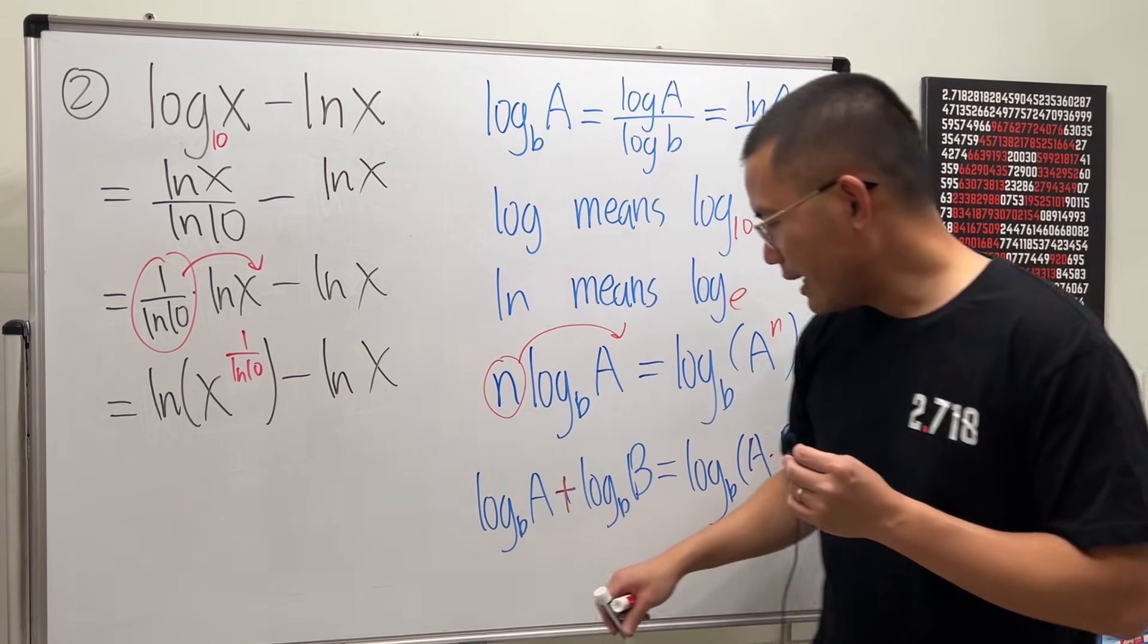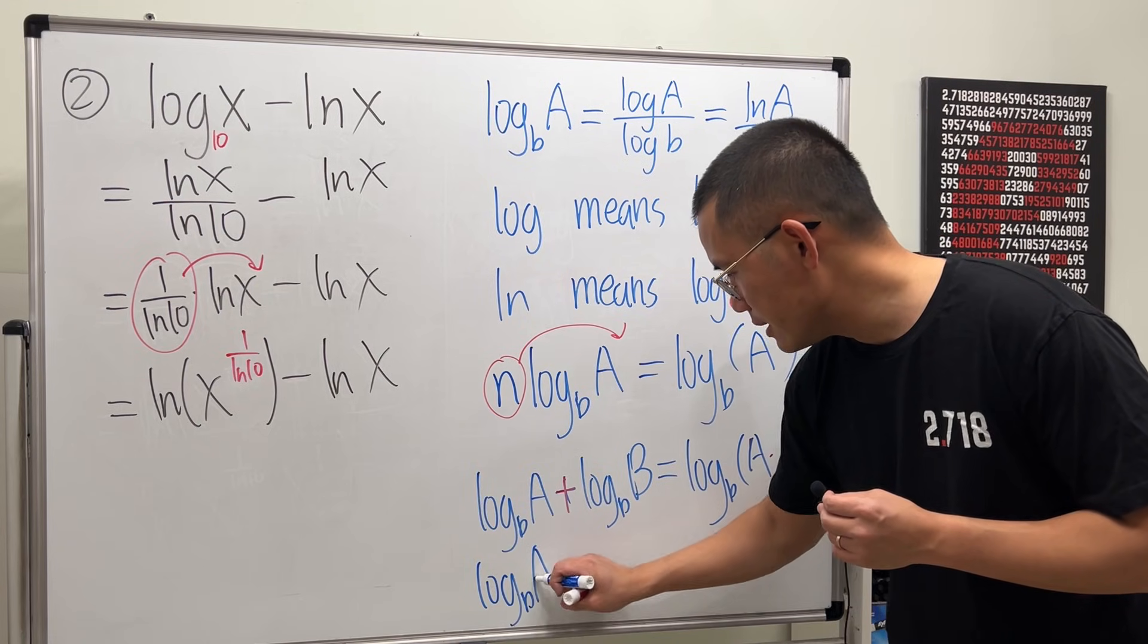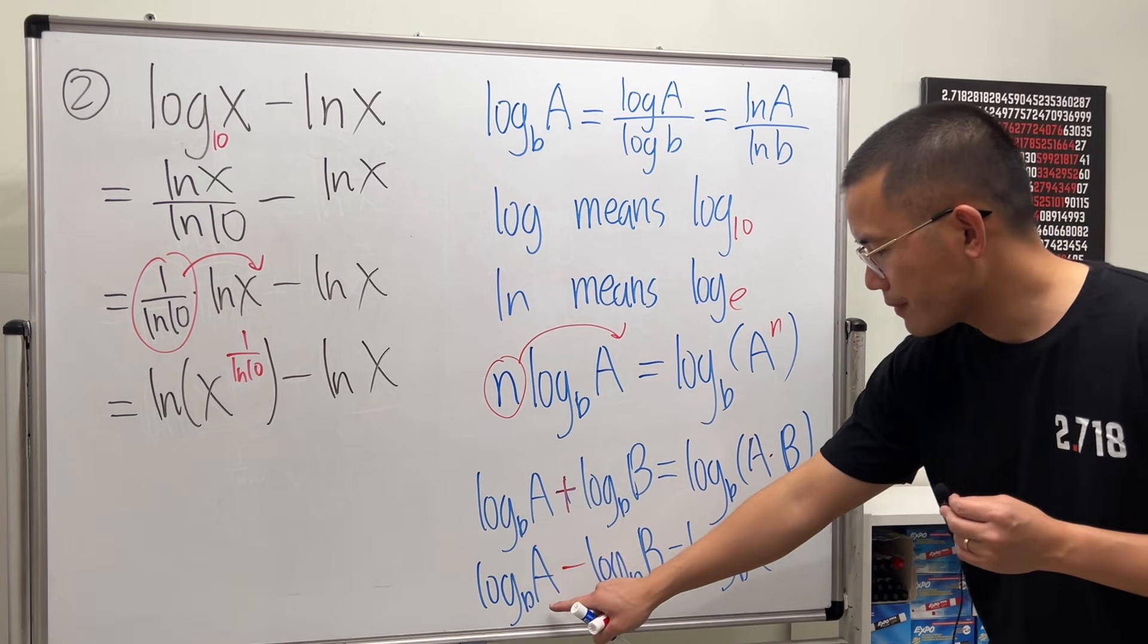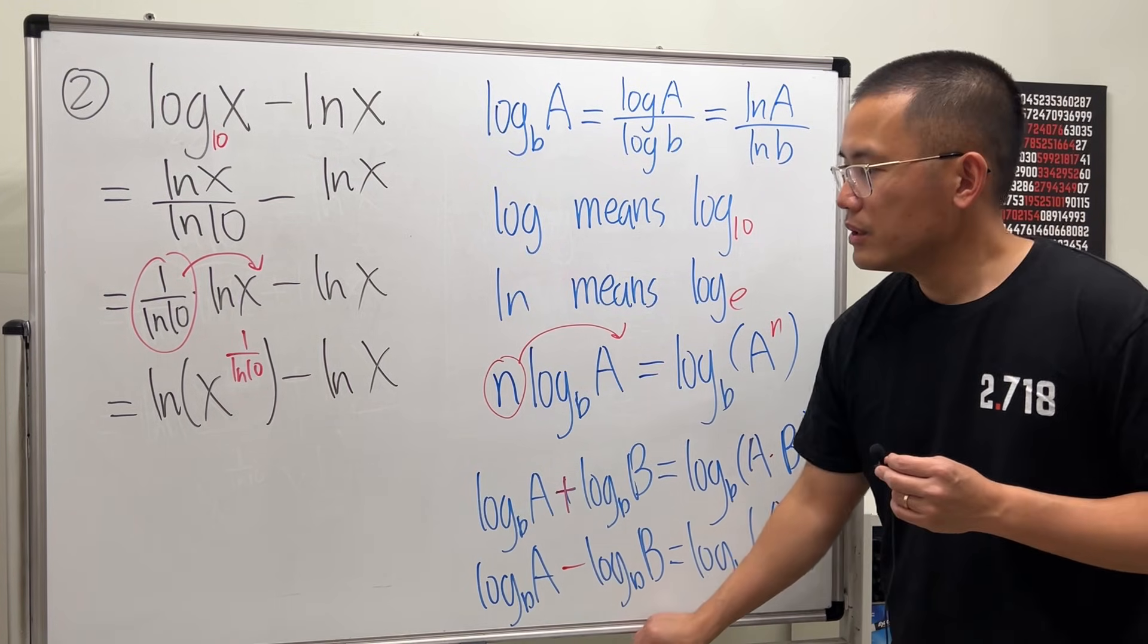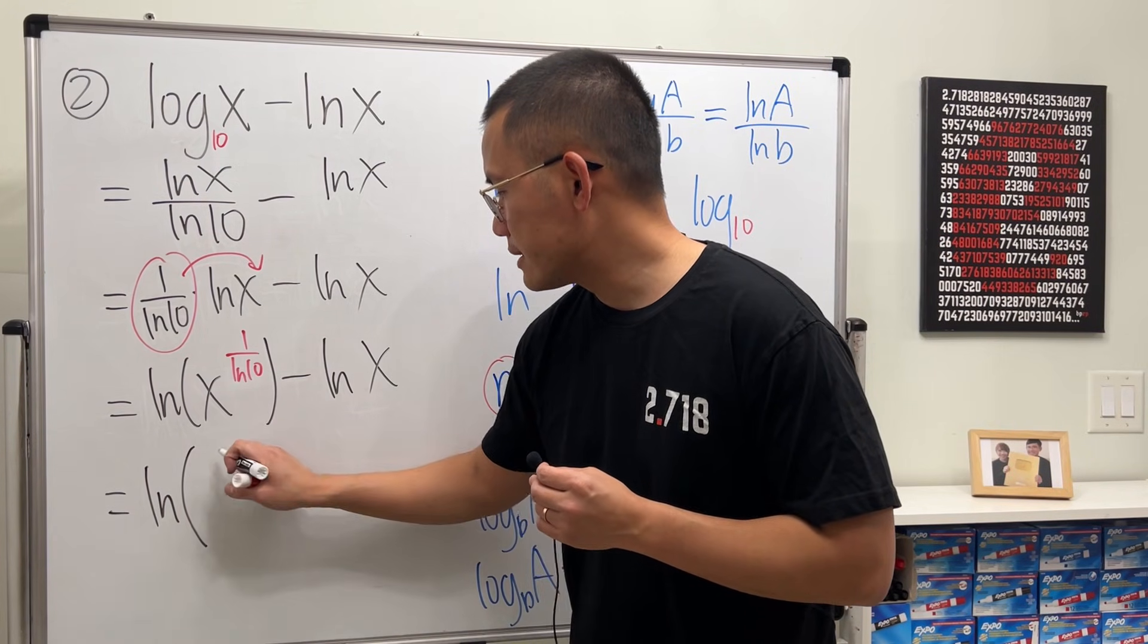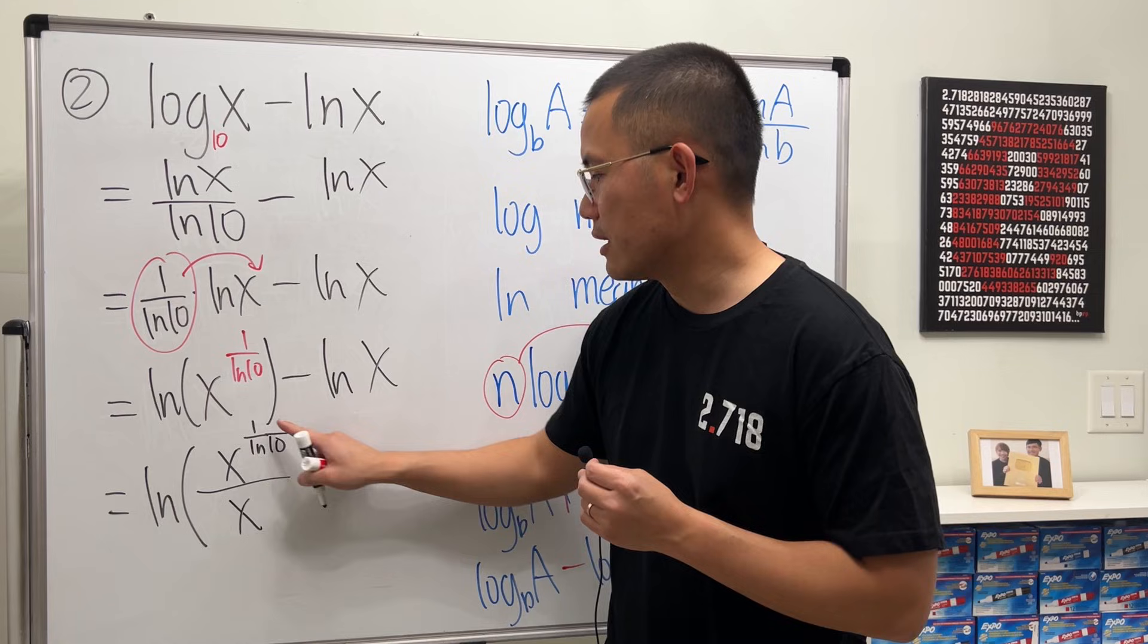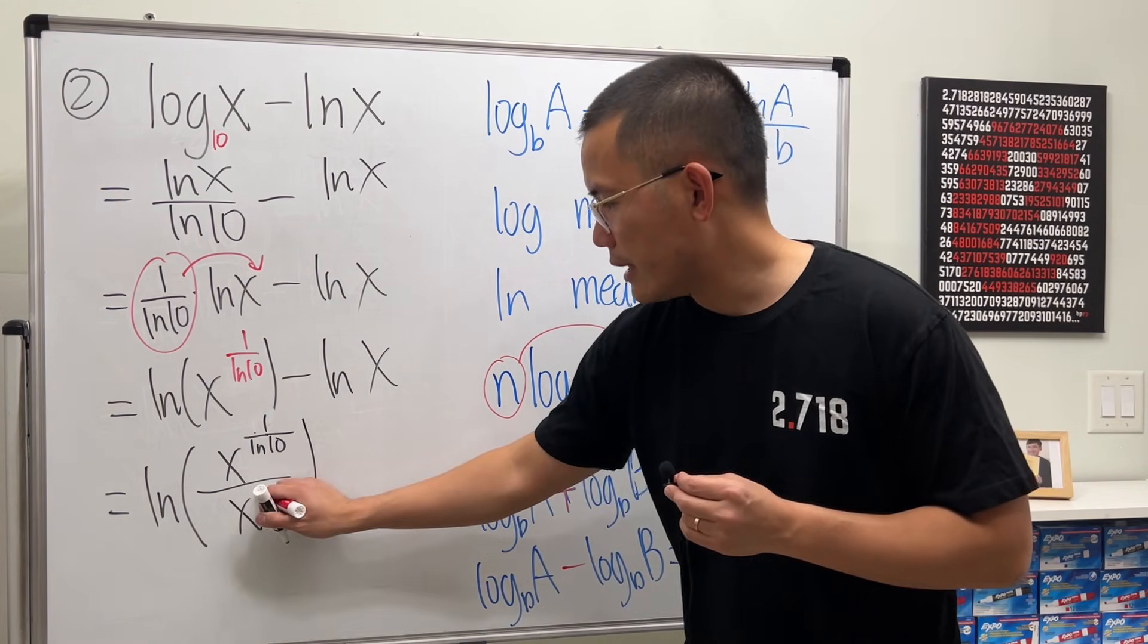Well, as I mentioned earlier, if we have a minus, we are going to get a division inside: A over B. So this is just going to give us ln of x to the 1 over ln 10 and then over x, and x is the same as x to the first power.